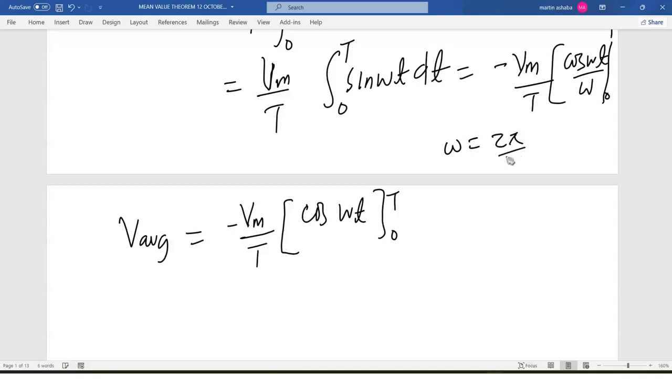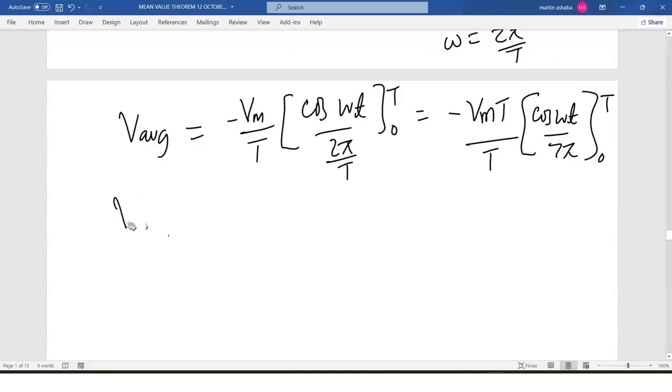But we know omega is equal to 2π out of T, so divided by 2π out of T. This becomes, after simplifying, negative Vm*T divided by T into cos(ωt) out of 2π, from 0 to T. So V_average equals negative Vm into cos(ωt) minus cos(0) is 1.